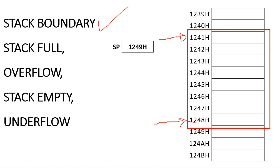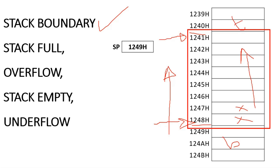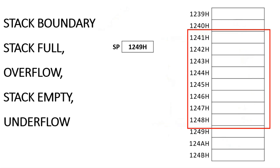The lower boundary of the stack is 1248H, and the upper boundary where the stack ends is 1241H. Stack is filled vertically — we fill from the bottom first and keep moving toward the top. So the stack boundary means 1248H is the bottom and 1241H is the top boundary address. Stack full condition occurs when SP is pointing to the top boundary — all items in the stack are filled.